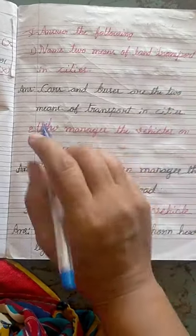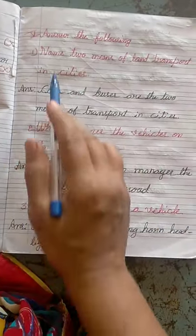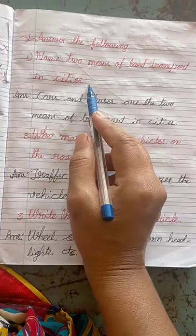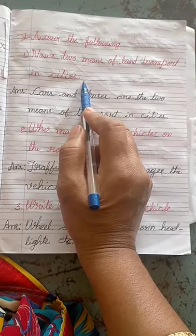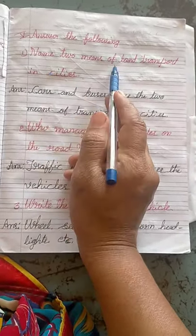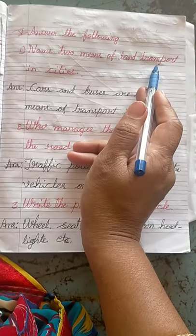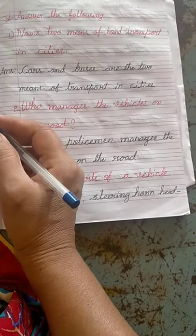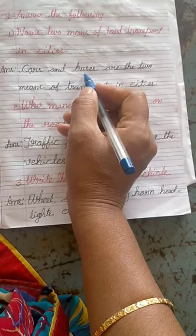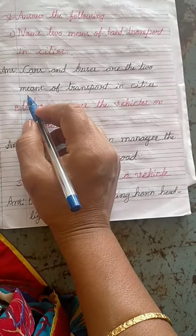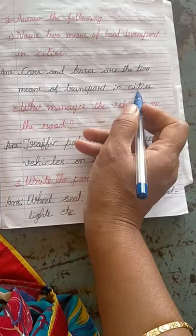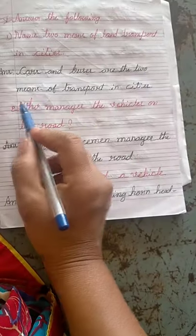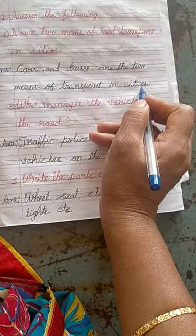Next, go to the question and answer section. Answer the following questions. Number one: name two means of land transport in cities. Cars and buses are the two means of land transport in cities.